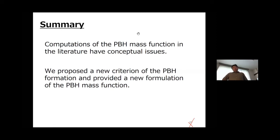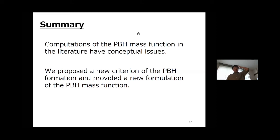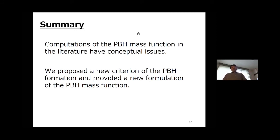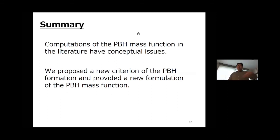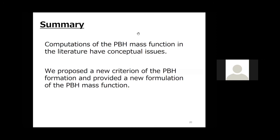By looking at a single black hole, since a black hole only carries information about mass and angular momentum, the black hole itself does not carry information about how it was formed. However, one possible way to distinguish whether LIGO black holes are primordial or astrophysical is to look at high-redshift events — redshift 10, 50, or 100 — which is not possible with current detectors but should be possible with future detectors. Since primordial black holes are formed in the very early universe, PBH mergers occur even at redshift 100 or redshift 50, continuously at any redshift — so detecting mergers at high redshift would be a smoking gun for primordial black holes.